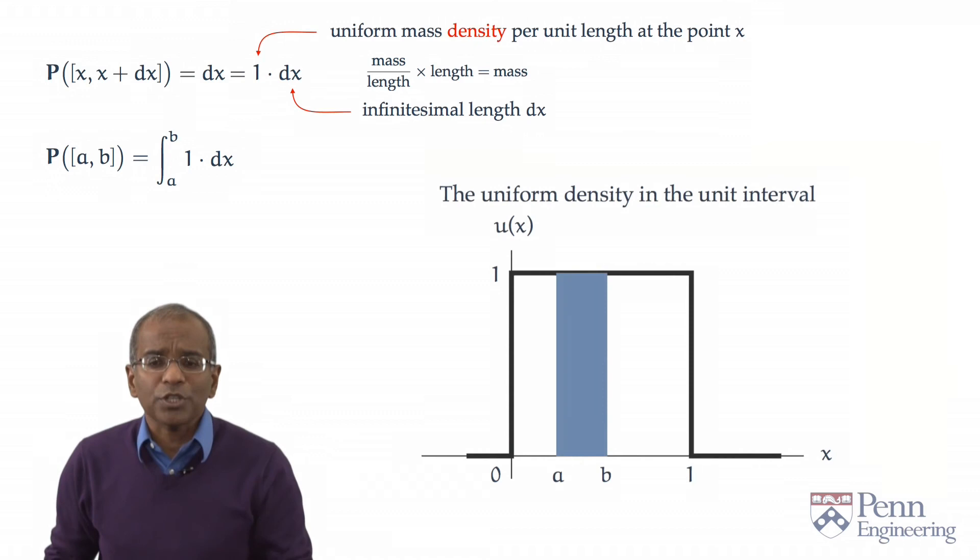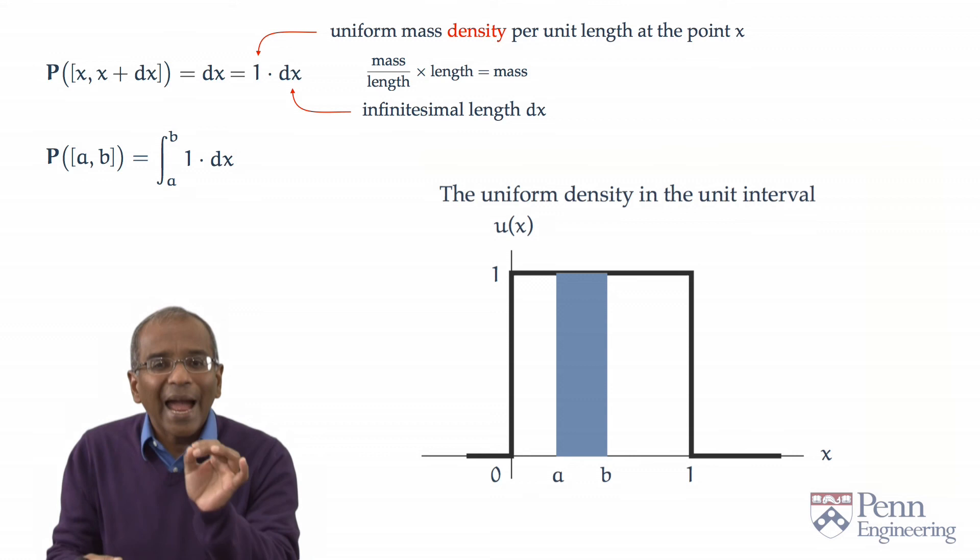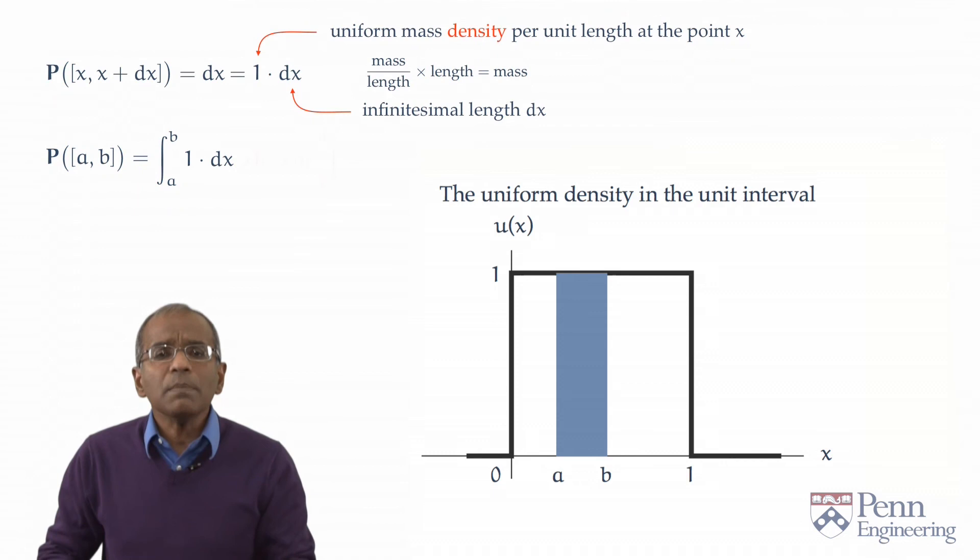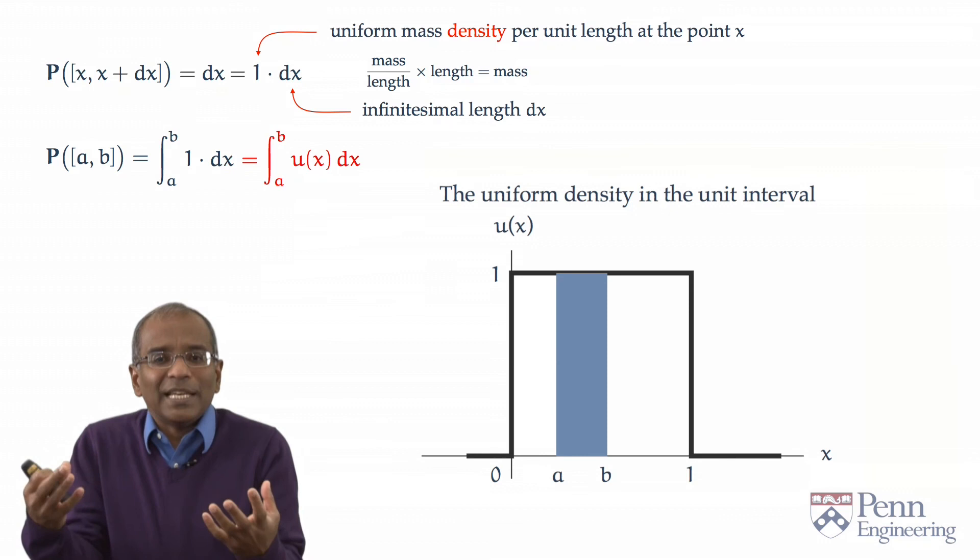Let us introduce a function, and naturally we're going to call it the uniform density in the unit interval. Let's call this function u(x). U of course is for uniform. It's a mnemonic. u(x) takes value 1 in the unit interval and 0 outside. We're going to think of u(x) as telling us something about the mass per unit length at the point x. How do we compute probabilities? We simply integrate this function. Remember, u(x) is just a fancy name for 1 as long as x is between 0 and 1. Outside 0 and 1, it is 0.